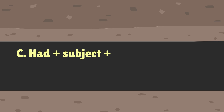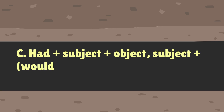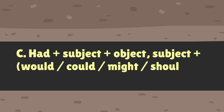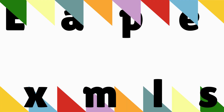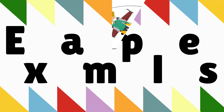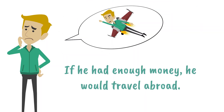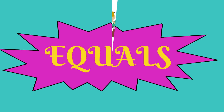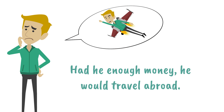Pattern C (Had): Had plus Subject plus Object, Subject plus Would/Could/Might/Should plus Infinitive. Example: If he had enough money, he would travel abroad. Equals: Had he enough money, he would travel abroad.